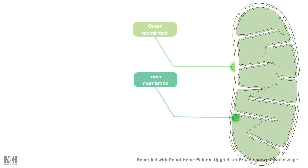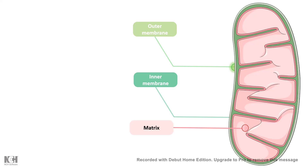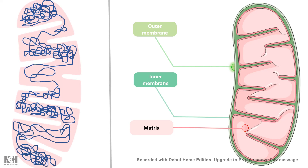In between these two membranes, there is an intermembrane space. Inside the inner membrane, there is the mitochondrial matrix. Now inside the matrix, there is DNA and ribosomes.